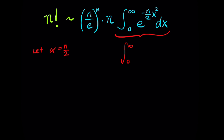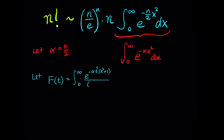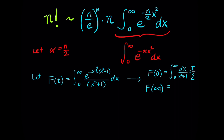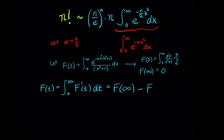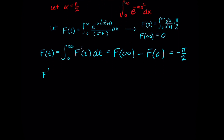This is a famous Gaussian integral. We'll calculate it using a trick due to Richard Feynman. We let alpha equal n over 2 and define a function F of t as the integral from 0 to infinity of e raised to the negative alpha times (t squared times x squared plus 1), all over (x squared plus 1), dx. At t equals 0 this gives an arctangent integral that evaluates to pi over 2, and as t goes to infinity the integral goes to zero. So by the fundamental theorem of calculus, the integral of F prime of t equals F of infinity minus F of zero, which is negative pi over 2.